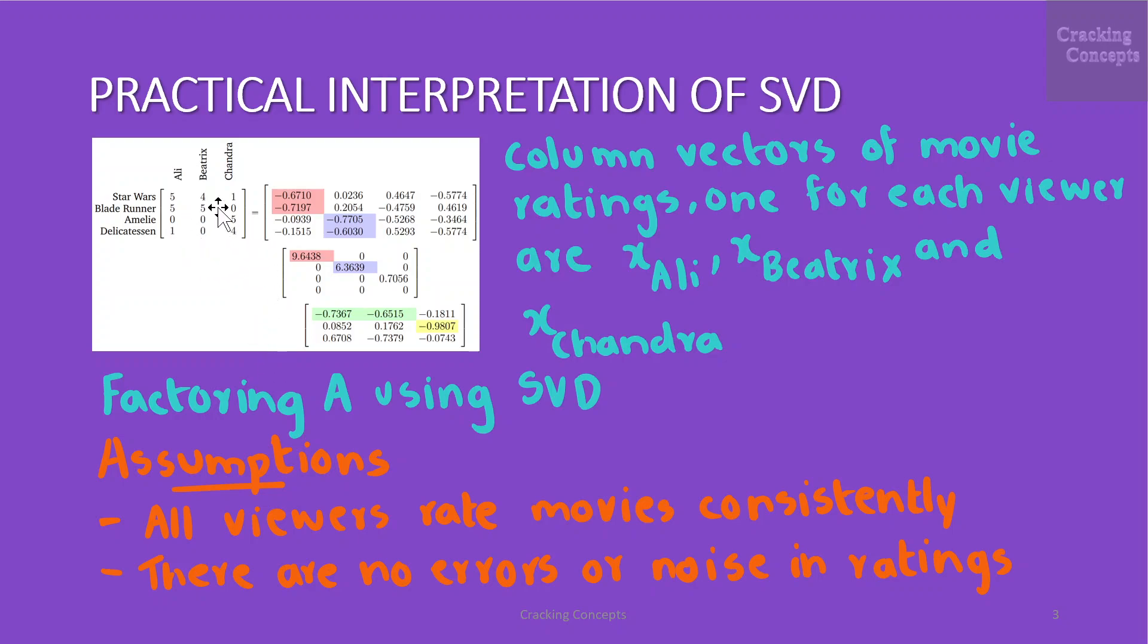After applying SVD on A, we got the components U, Sigma and V transpose. Applying SVD to our data matrix A makes a number of assumptions like all viewers rate movies consistently using the same linear mapping. There are no errors or noise in the ratings.